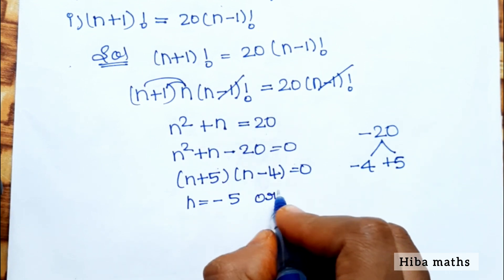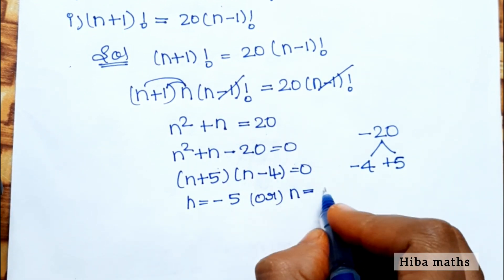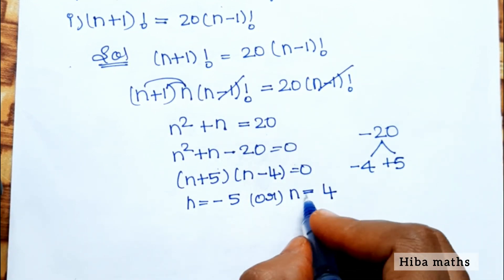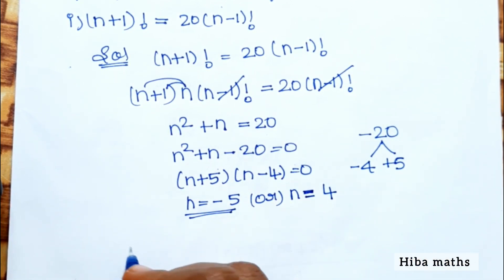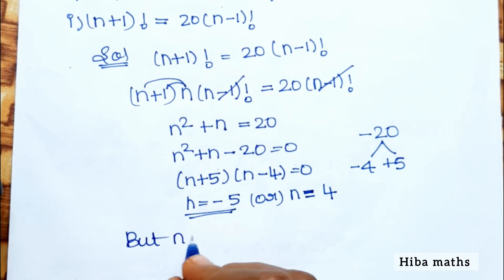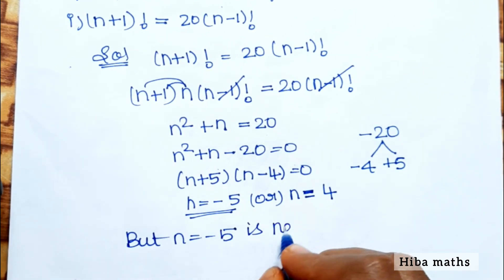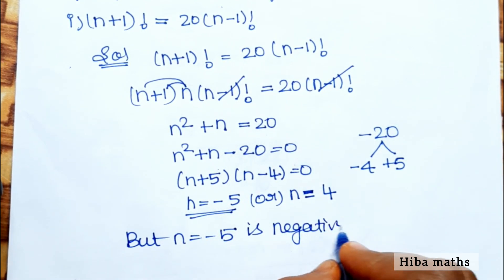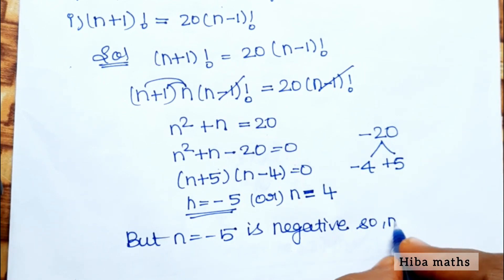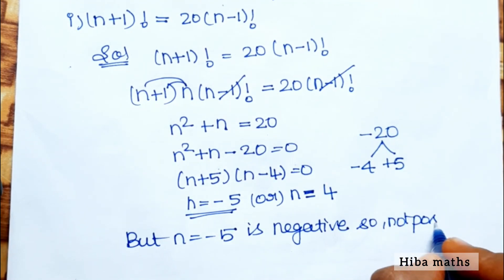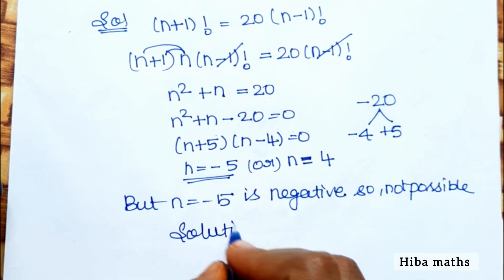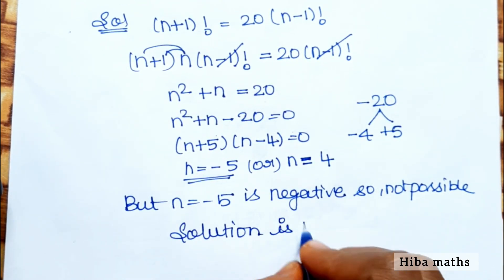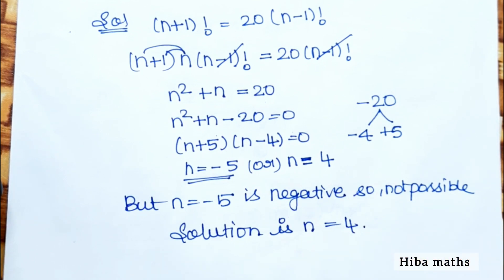Since n equals minus 5 is a negative value, it is not possible for a factorial. Negative values are not possible. Therefore the solution is n equals 4.